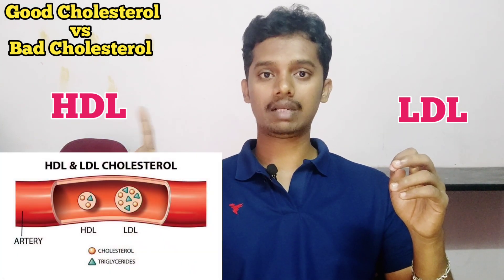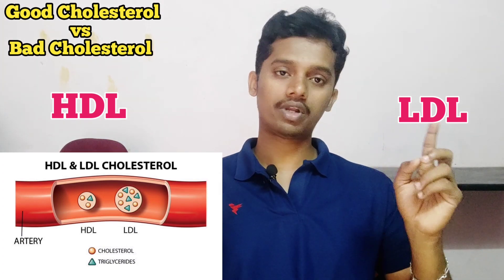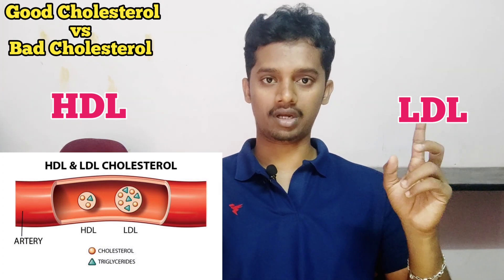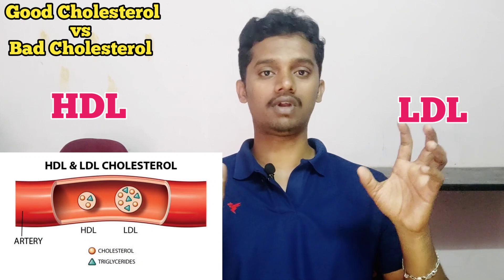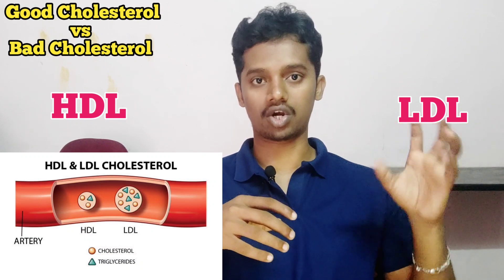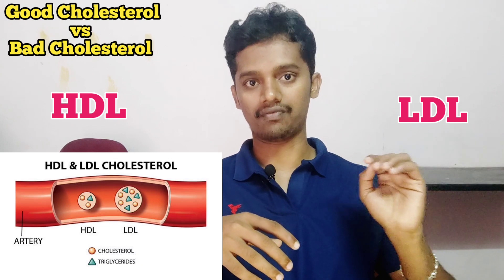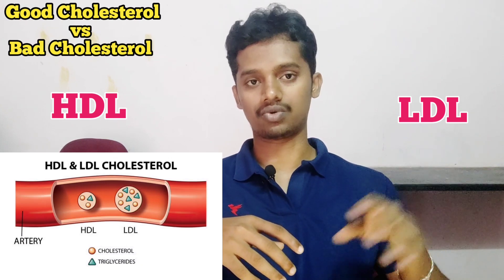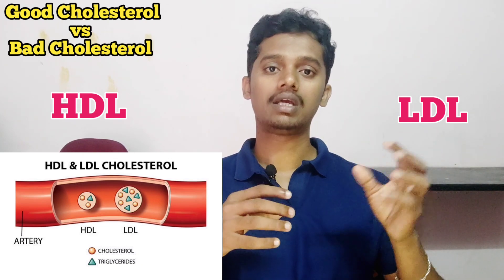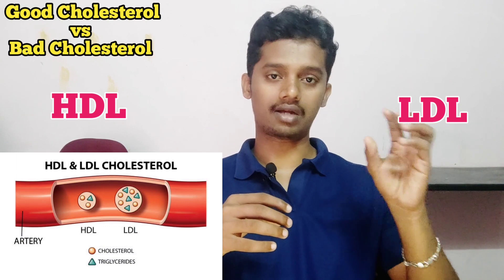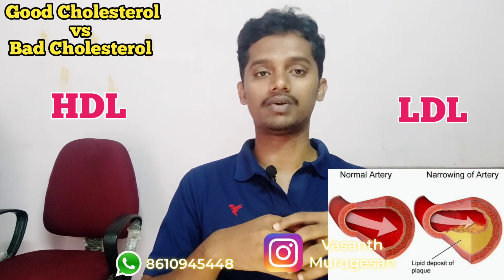High Density Lipoprotein just passes through. Low Density Lipoprotein, on the other hand, will form a clog and clot in the artery. When it is passing through the artery, it builds up and stores in the artery, forming a plaque.